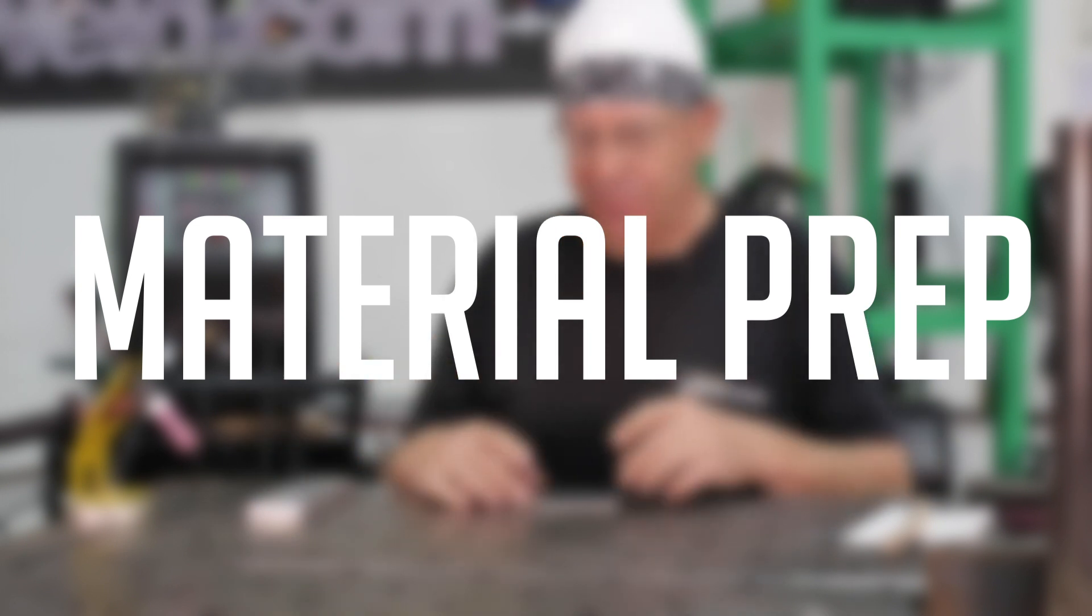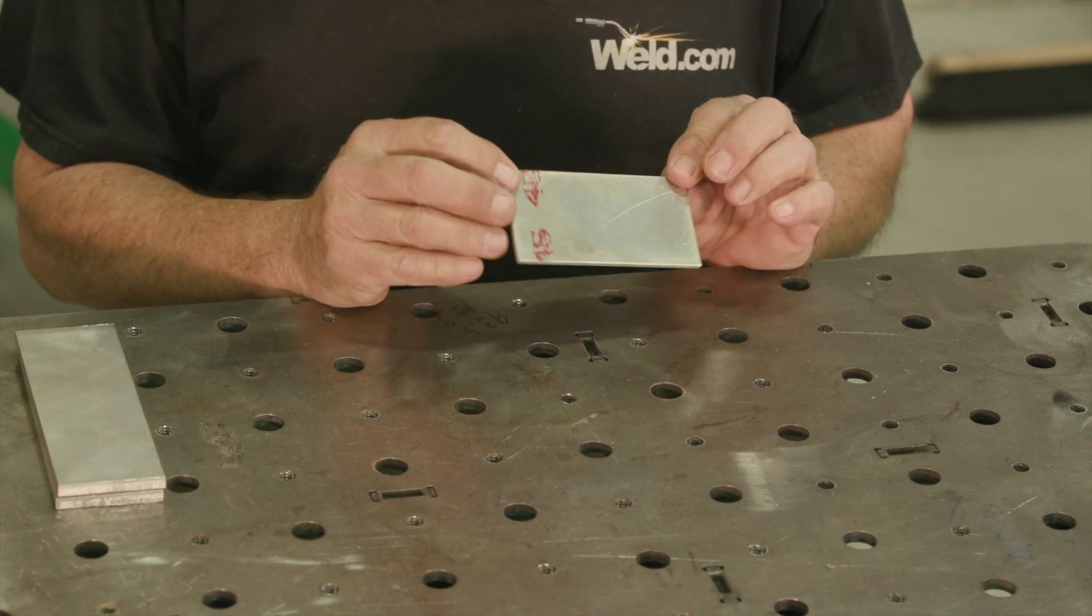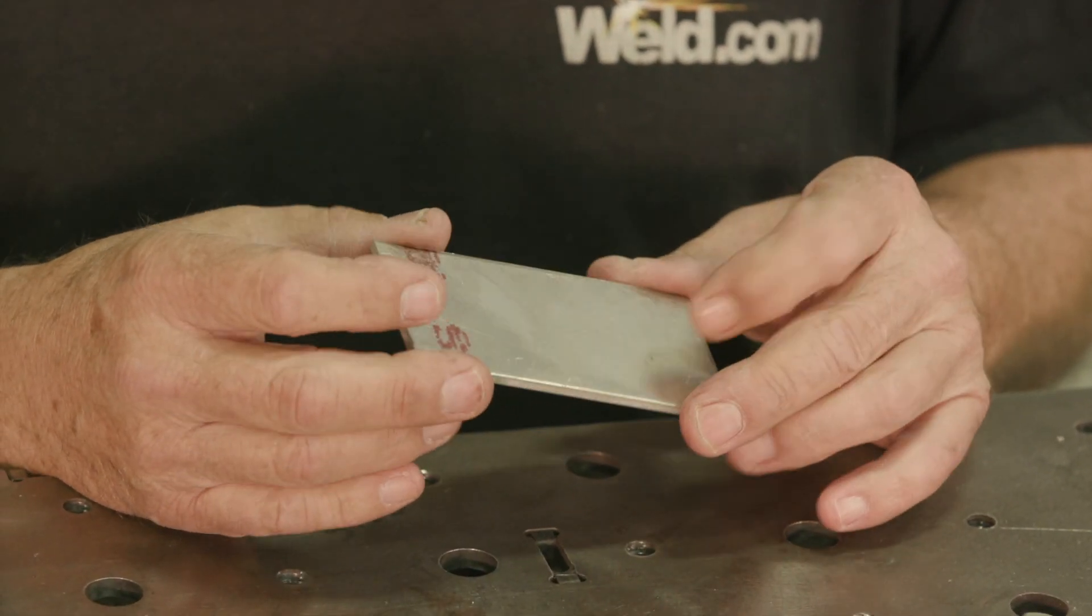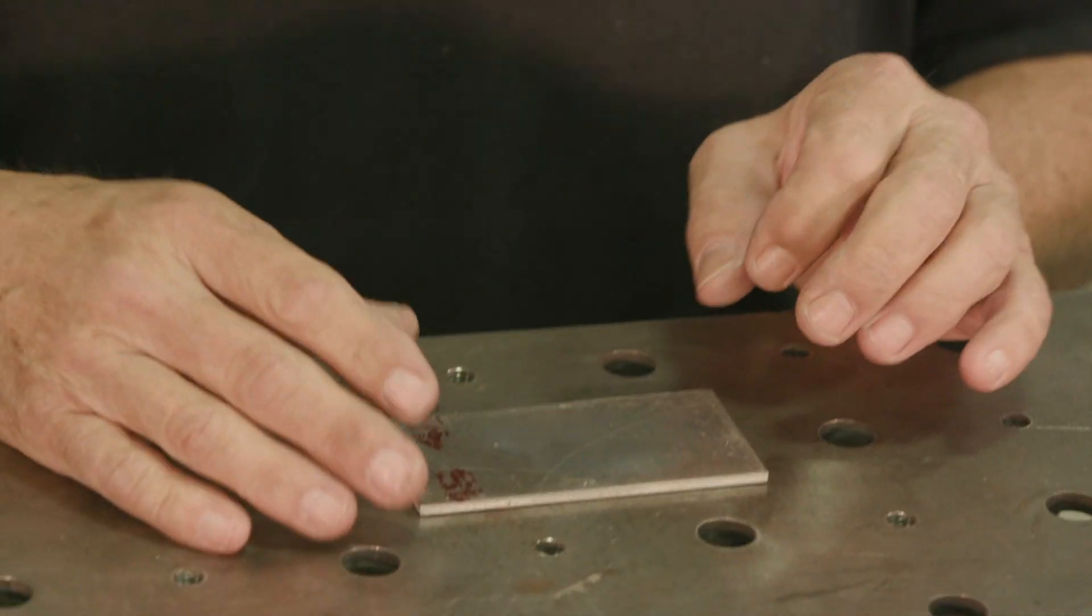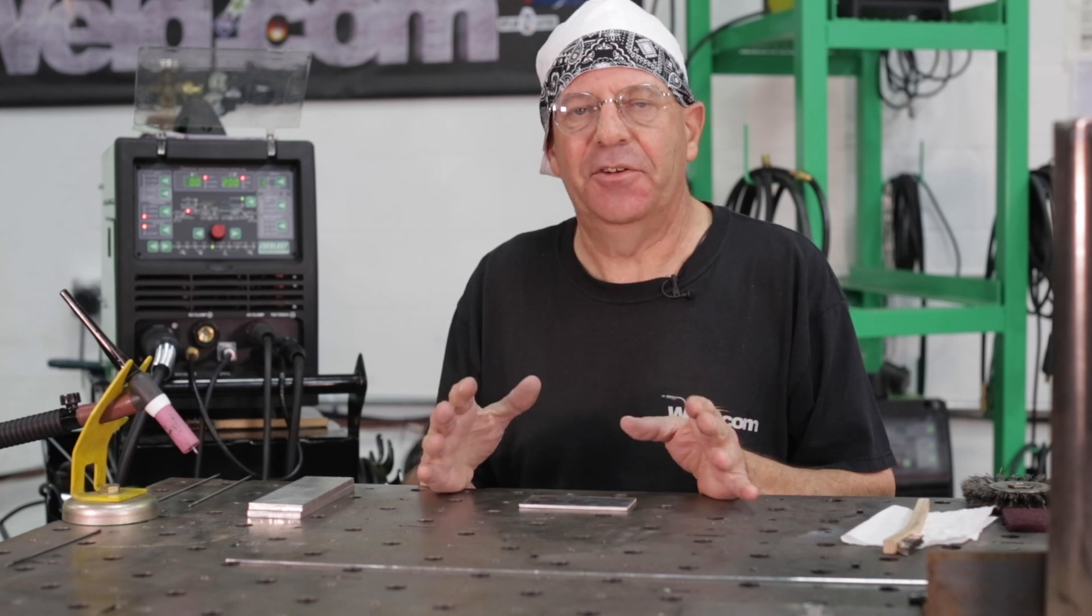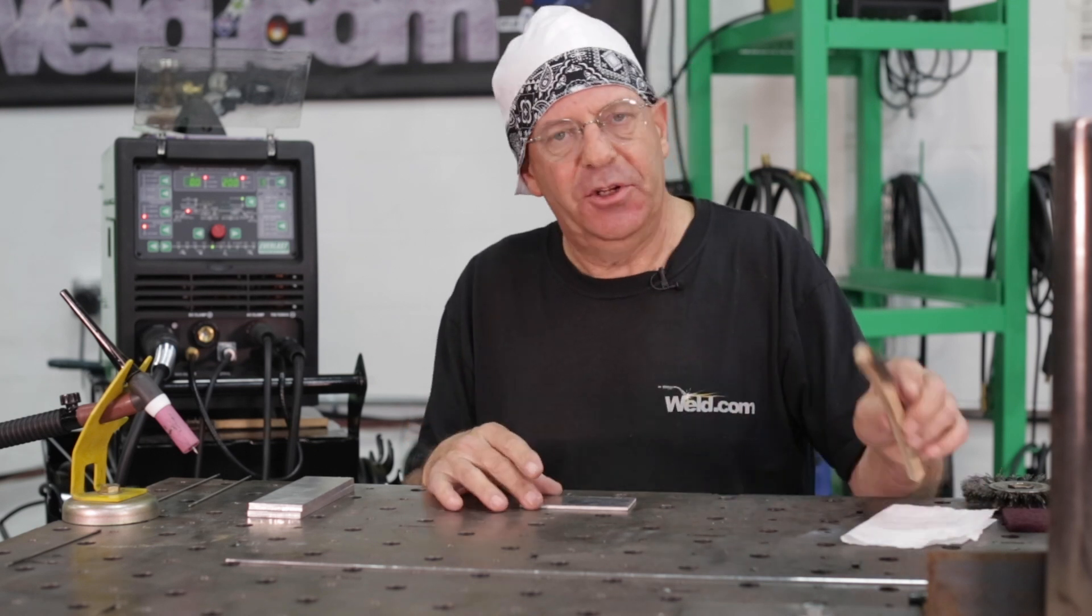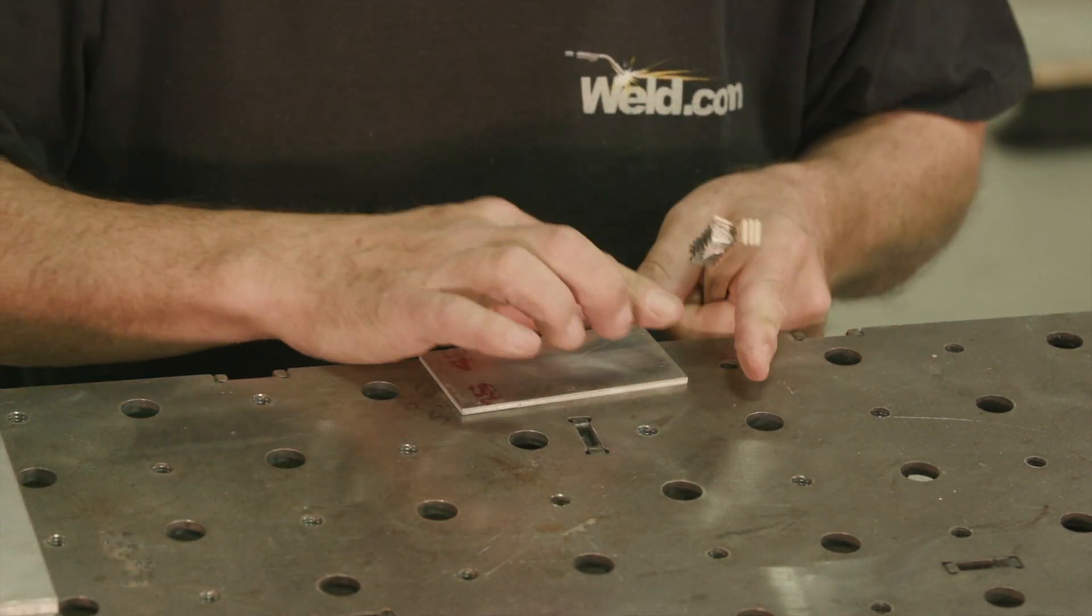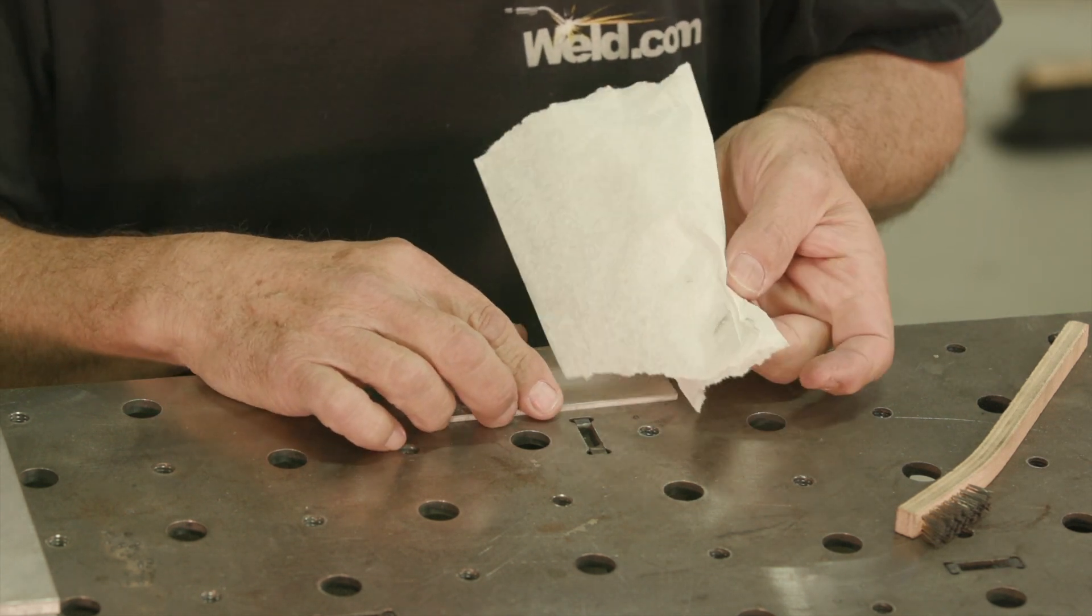The next thing we need to talk about is material preparation. I have a piece of aluminum here that is untouched, as it came in. All we did was shear it up. It looks clean. It's not. Here's what happens.